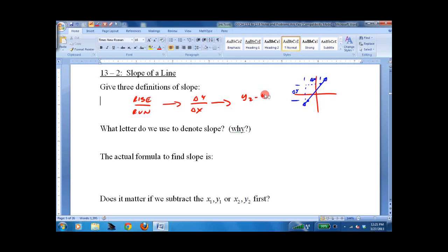Slope and still others remember the definition, y2 minus y1 over x2 minus x1. So slope is just the steepness of a line, the direction it takes, things along those lines. What letter do we use?